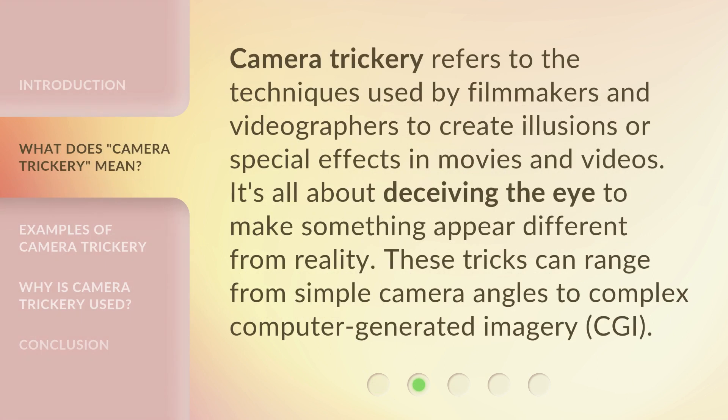Camera trickery refers to the techniques used by filmmakers and videographers to create illusions or special effects in movies and videos. It's all about deceiving the eye to make something appear different from reality. These tricks can range from simple camera angles to complex computer-generated imagery, CGI.